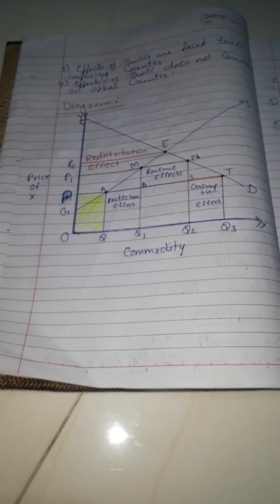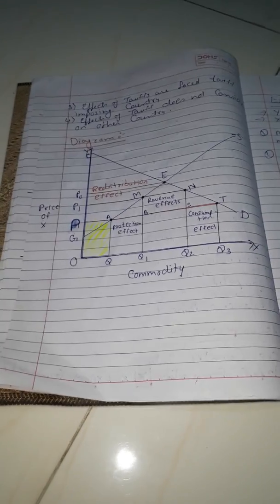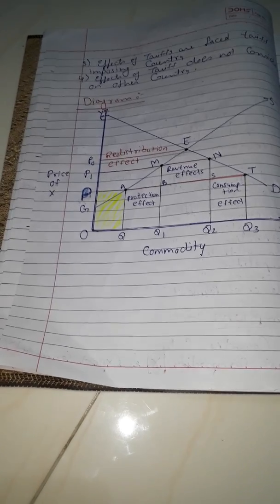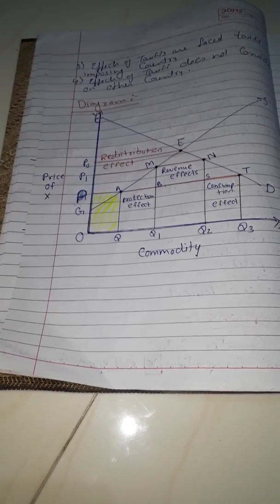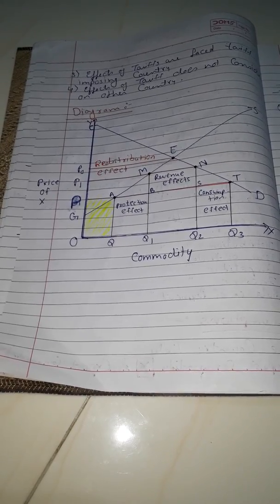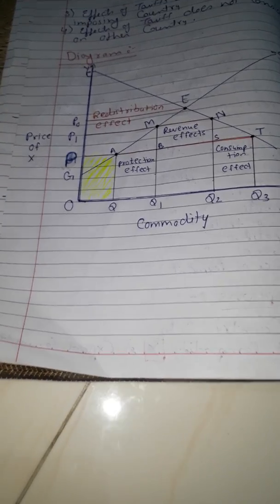Due to import, our price is now OP. At price OP, the quantity produced in our country is OQ, and we are demanding OQ3. So we are producing OQ and demanding OQ3.